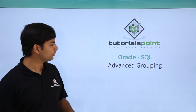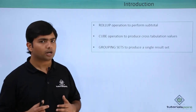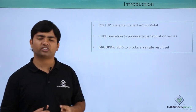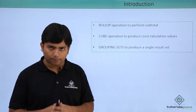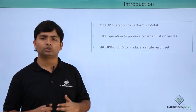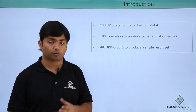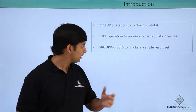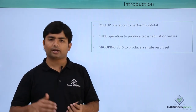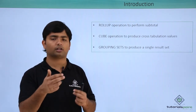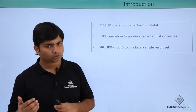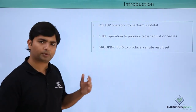In this video we will cover more about grouping — specifically the ROLLUP operator, which is used for subtotaling; the CUBE operator, which performs cross tabulation across two or more columns; and the GROUPING function, which tells us which function is in action for a particular output record. Let's see all these things practically now.